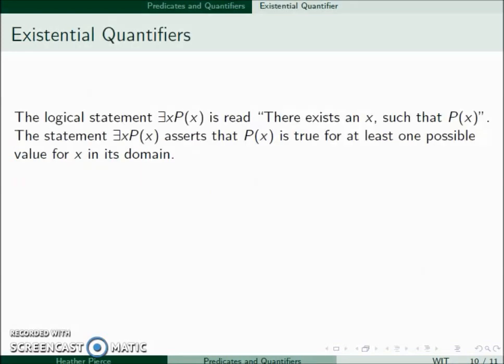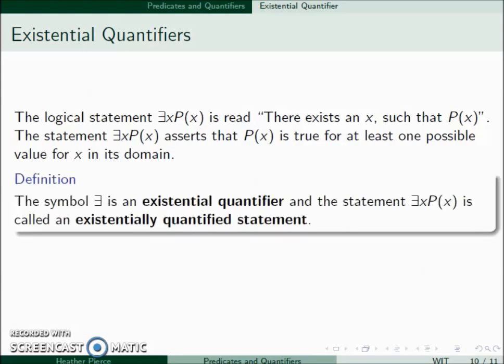We also have existential quantifiers. This is read as there exists an x such that P(x), and it asserts that it's true for at least one possible value, so it may not be true everywhere but it happens at least once. This is called an existential quantifier and an existentially quantified statement.